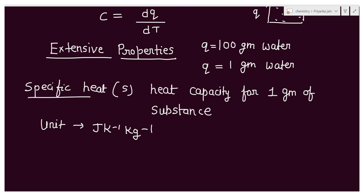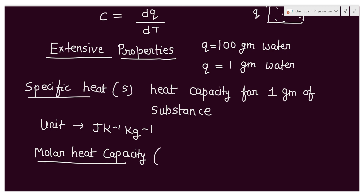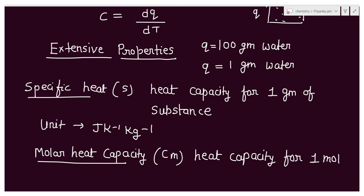Similarly, there is molar heat capacity. Whenever you see the molar term in a property — per gram, per mole — it indicates an intensive property. Molar heat capacity is denoted by Cm and it is the heat capacity of one mole of substance: the amount of heat required to raise the temperature of one mole. Its unit is Joule per Kelvin per mole.